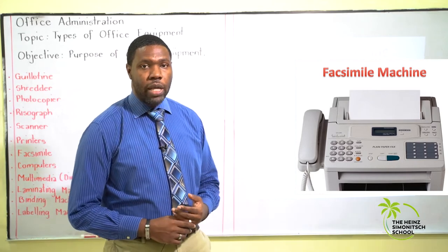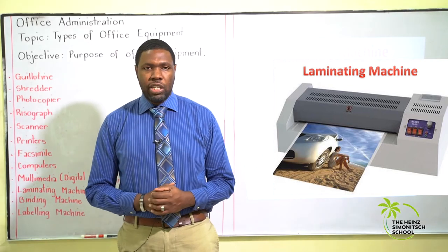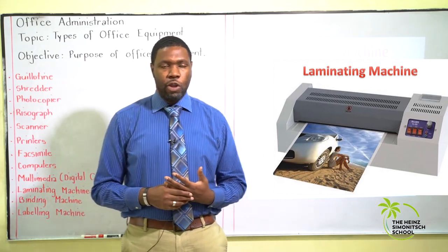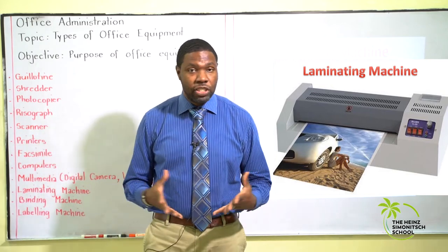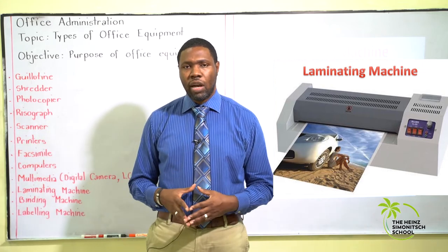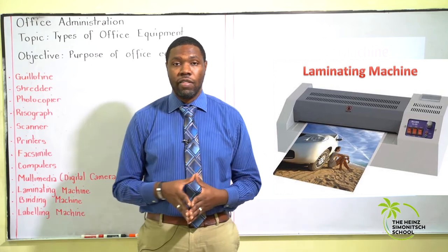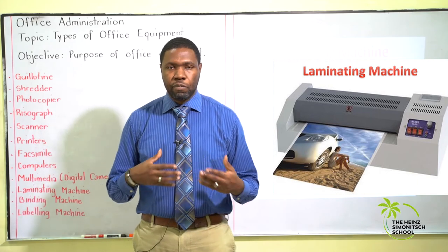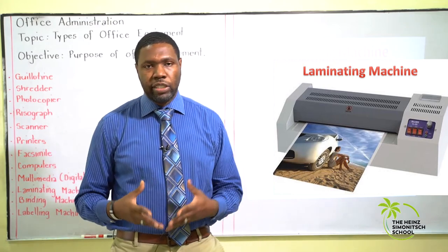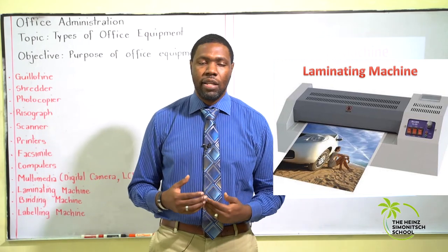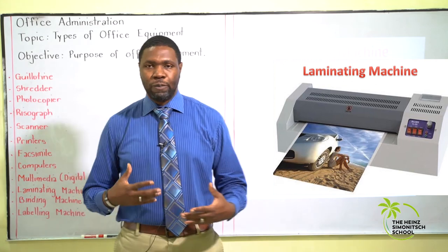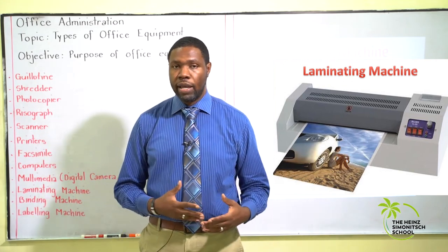The next equipment is the laminating machine — a device that seals a document in a transparent plastic covering. Documents that need to be preserved for an extended period, such as company certificates, licenses, and identification cards, can be preserved using a laminating machine. Laminating documents will pretty much preserve them for the lifetime of the business, making a document that much more durable. Some things to consider when purchasing a laminating machine include how fast it laminates a document, since it uses heat and takes some time to warm up.